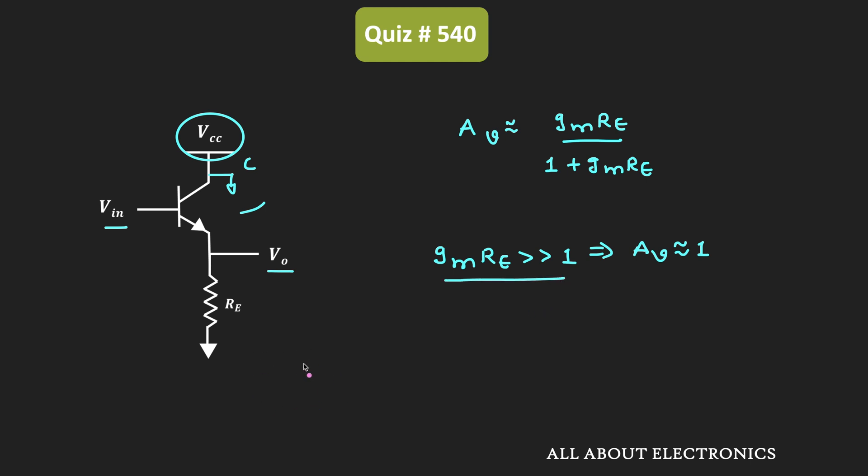Now you also know that for the BJT, this transconductance gm can also be given as IC divided by VT. So VT times Re should be much greater than 1.